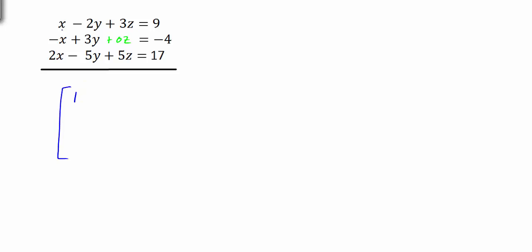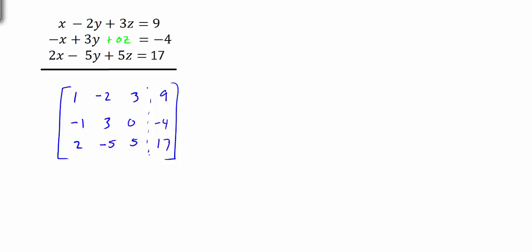So we're going to bring down: we have 1x, negative 2y, 3z, and 9. So that would be 1, negative 2, 3, and then 9. And then we have negative 1, 3, 0, negative 4, then 2, negative 5, 5, and 17.